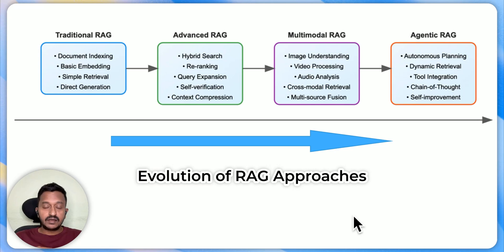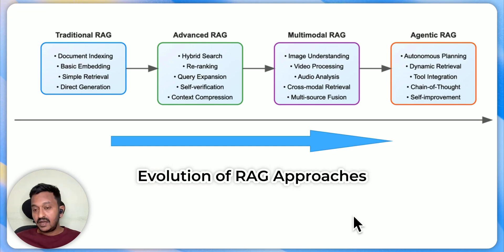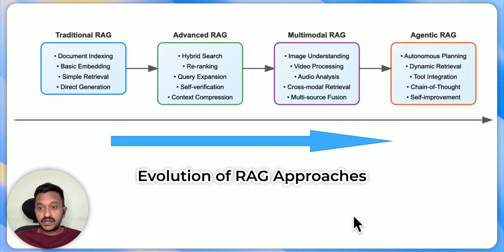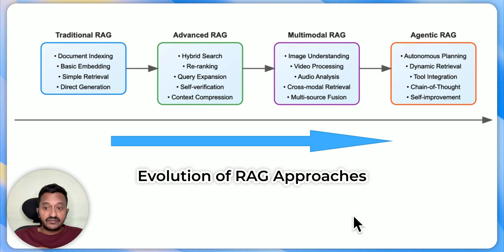And now everybody's talking about agentic RAG, where agents plan everything, function calling happens, and big complex tasks are divided into subtasks. These autonomous agents come together to basically solve complex tasks. This involves tool integration, self-improvement, and chain of thought.